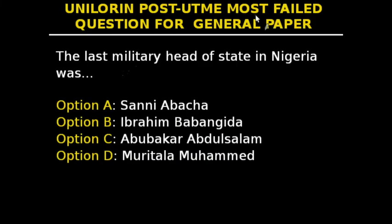Question 18: Who was the last military head of state in Nigeria? Options are Sani Abacha, Ibrahim Babangida, Abubakar Abdulsalami, and Murtala Muhammad. All were military heads of state, but Abubakar Abdulsalami was the last. He took office on 8 June 1998 and left office on 29 May 1999. The answer is option C.